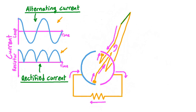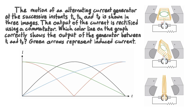Now that we've seen how a commutator rectifies alternating current into a direct current, let's work through an example. The motion of an alternating current generator at the successive instances T1, T2, and T3 is shown in three images. The output of the current is rectified using a commutator. Which color line on the graph correctly shows the output of the generator between T1 and T3? Green arrows represent induced current.